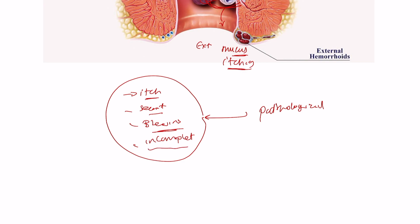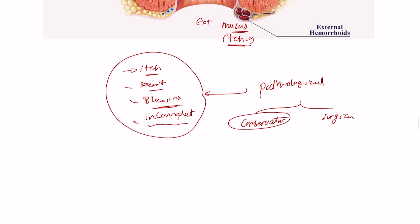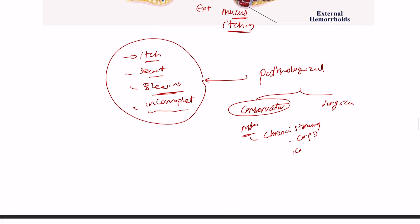At this stage, treatment of the haemorrhoids may be needed. Treatment can be conservative or surgical. For conservative treatment, we need to avoid the risk factors. Risk factors include chronic straining — whether from chronic cough in COPD patients, chronic constipation, or carrying heavy objects. We can give topical cream, reassure the patient, and provide some toilet training advice.